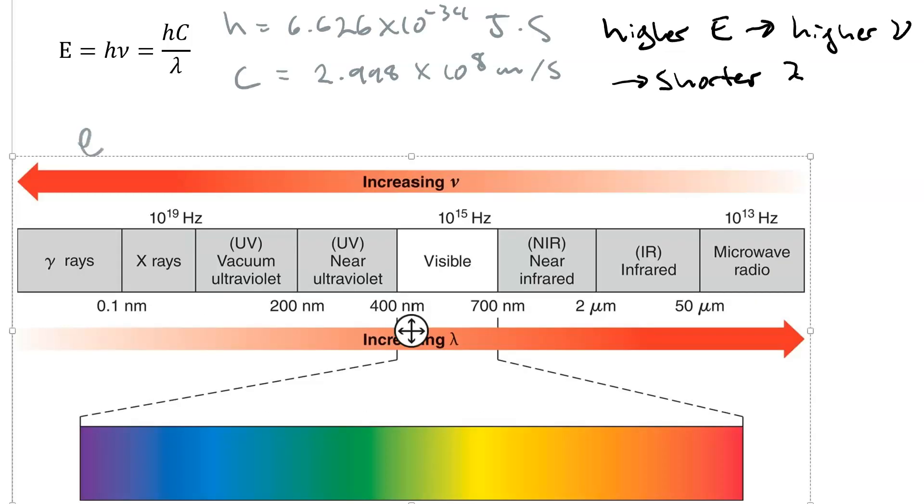Here is a depiction of the electromagnetic spectrum. Notice, as you move to the left, frequency is increasing. As you move to the right, wavelength is increasing. This means that energy also increases as you move to the left.